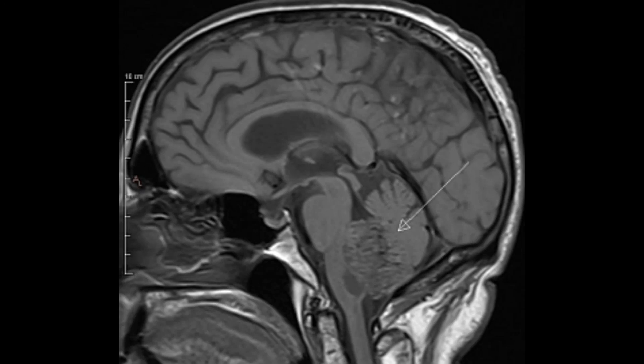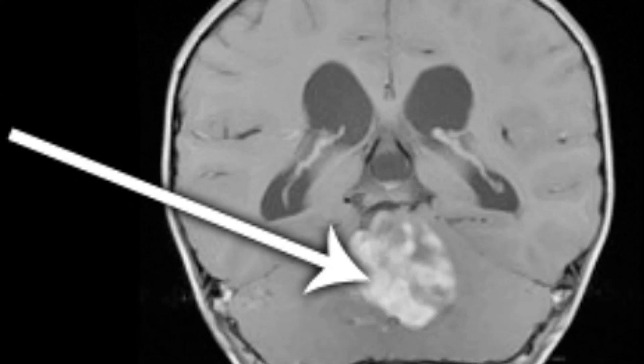Moving on to the fourth ventricle — you have ependymoma, or the malignant form, ependymoblastoma. It has obstructed the fourth ventricle in this T1-weighted image, causing hydrocephalus, which is represented by headaches, nausea, altered level of consciousness, etc. And here is a coronal section of the same.